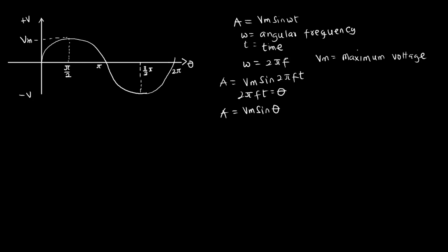All we have to do is calculate the area of the sine wave. Looking at this sine wave, it is symmetrical, which means what you have on the positive half, you have the same on the negative half. So when I calculate the area of the positive half and the negative half and add them, the total area equals zero. For this reason, I'm going to calculate only the positive half and use that to derive the formula for the RMS value.